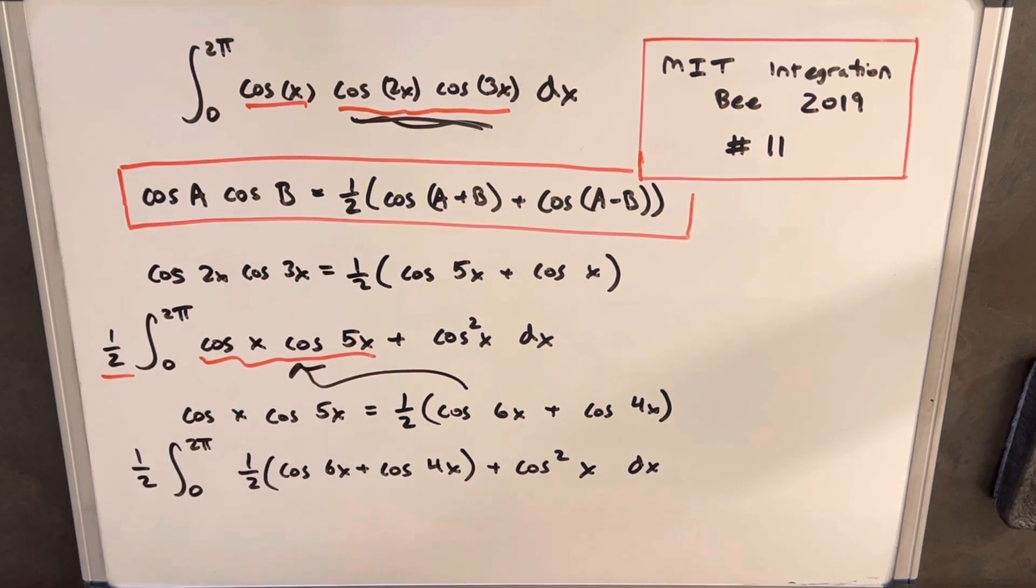So plugging that in, we've rewritten our integral, and then you'll notice we're pretty much ready to integrate. We know how to integrate this. We know how to integrate this. This is just going to be a sine function with a little left to mess with that angle a little bit. But we still need to simplify cosine squared x. But we can use the angle reduction formula for that.